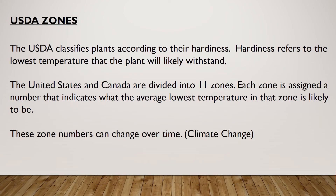The USDA classifies plants according to their hardiness. Hardiness refers to the lowest temperature that a plant will likely withstand. The United States and Canada are divided into 11 zones, each assigned a number indicating what the average lowest temperature in that zone is likely to be. Remember, these zone numbers can change over time with climate change.